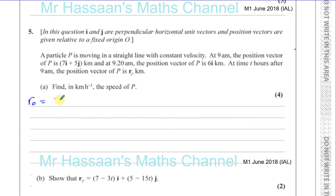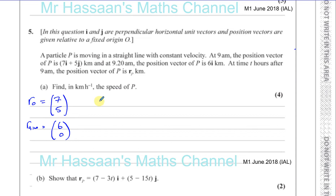r₀ is 7i + 5j, so as a column vector that's (7, 5). At 9:20 the position vector of P is 6i, so as a column vector that's (6, 0). The formula for the position vector of a particle is r = r₀ + v·t, where r is the position at any particular time, r₀ is the initial position, v is the velocity vector which is what we need to find, and t is the time.